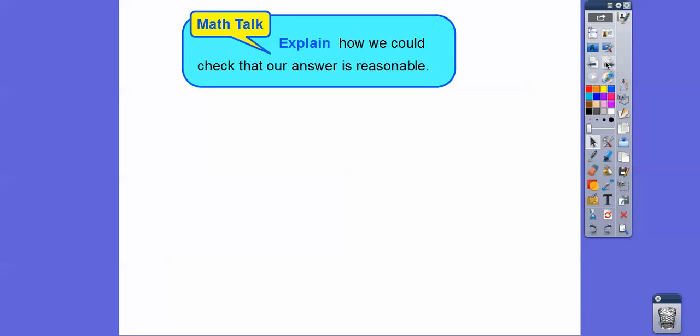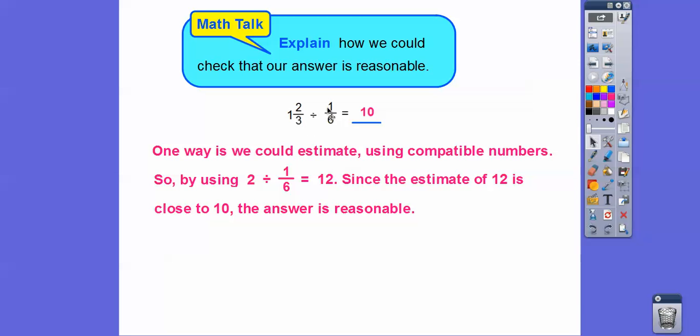All right, so how can we check that our answer is reasonable? Well, we had the problem 1 and 2/3 equals 1/6 equals 10, so what we can do is use compatible numbers and round this guy to 2. So 2 divided by 1/6 is 12, and since 12 is close to that 10 right there, we can think that our answer is reasonable right there.